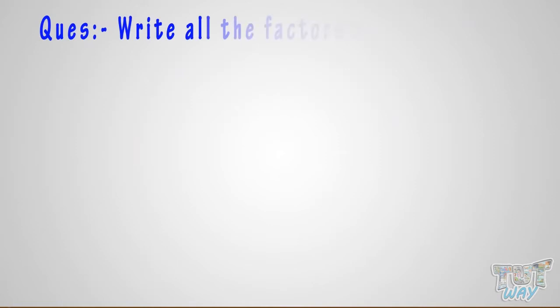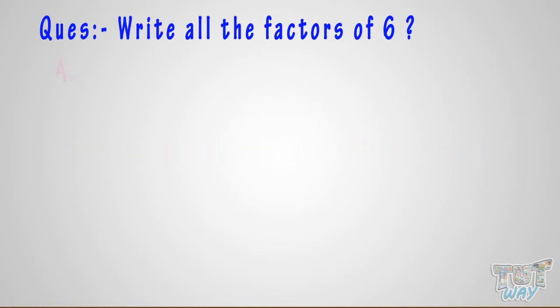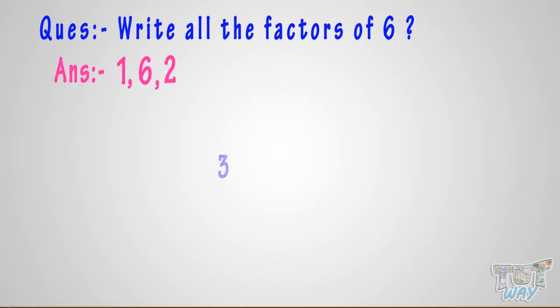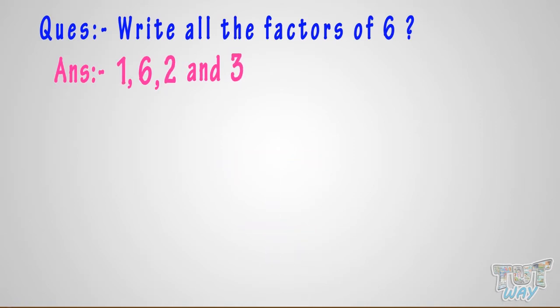Now, write all the factors of 6. First of all, 1 and the number itself are factors of every number, so 1 and 6 are factors of 6. Next, 2 can divide 6 completely, and 3 can divide 6 completely. So, 1, 2, 3, and 6 are the factors of 6.